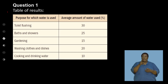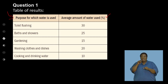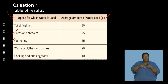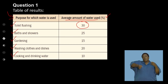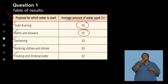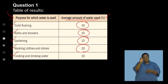The learners established what water was used for and asked households to measure the average amount used. Information was collected for: flushing of toilets, baths and showers, gardening, washing clothes and dishes, and cooking and drinking water — measured as a percentage. Looking at the table, a large percentage is used for flushing, almost a quarter for baths and showers, a percentage for gardening, 20% for washing clothes and dishes, and a significantly smaller percentage for cooking and drinking.